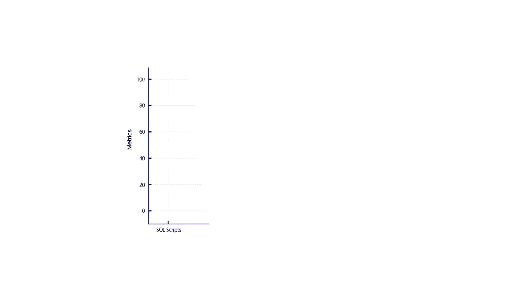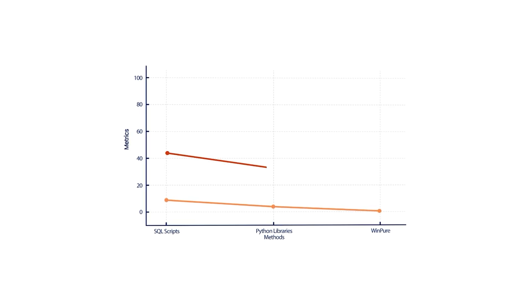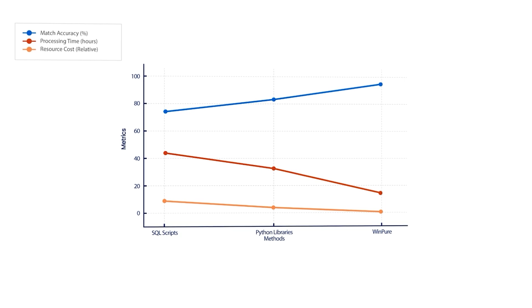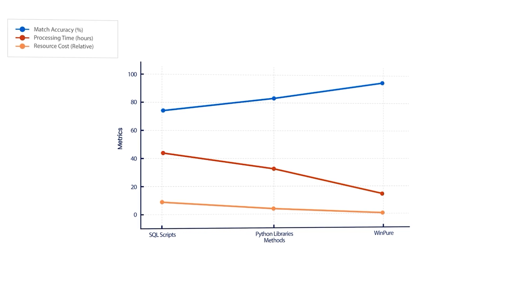Compared to traditional match processes such as SQL scripts or Python libraries, a platform like WinPure can deliver faster, more accurate match results without demanding additional time and resources.